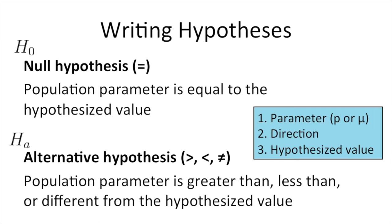The second piece of information you need is the direction of the alternative hypothesis, which you'll get from your research question. Do you want to know if the population mean or proportion is greater than, less than, or different from a given value? That will determine the sign in the alternative hypothesis. The third piece of information is the hypothesized value, which should be given to you in the research question or scenario.